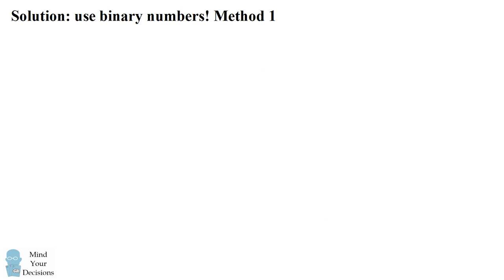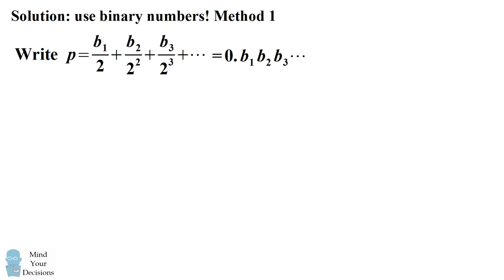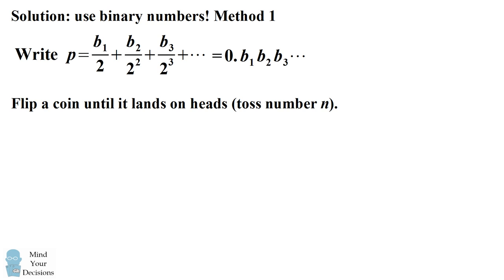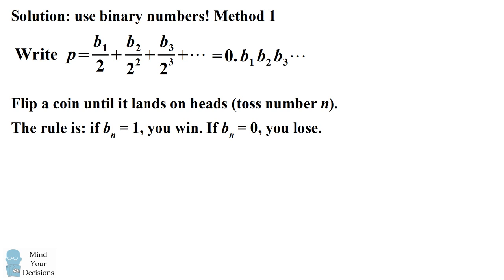So how is this going to help us? We have the probability in its binary form. Here's the game we're going to define. Flip a coin until it lands on heads for the first time. Let's say that's toss number n. The rule of the game is that if b sub n equals 1, you win the game. If b sub n equals 0, then you lose the game.